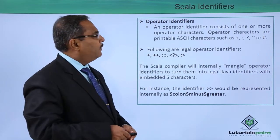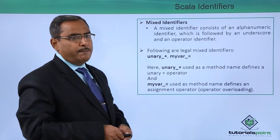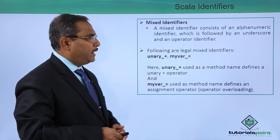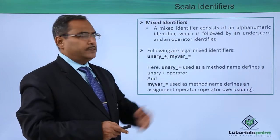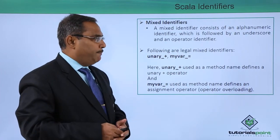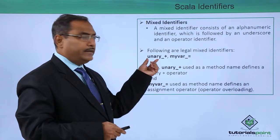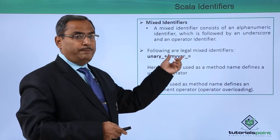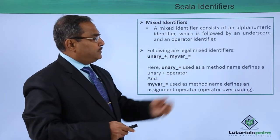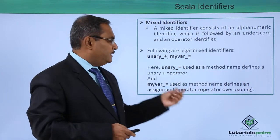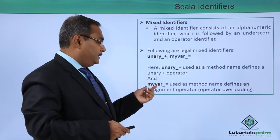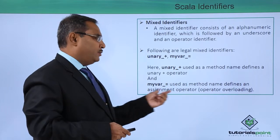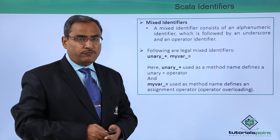Now let us go to the third category: mixed identifiers. A mixed identifier consists of an alphanumeric identifier followed by an underscore and an operator identifier. For example, 'unary_+' is used as a method name that defines a unary plus operator, and 'myVar_=' is used as a method name that defines an assignment operator. These are used for operator overloading.